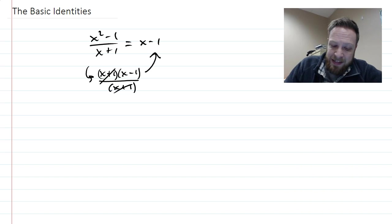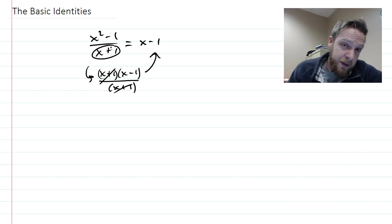And so that is an example of an identity here. We're basically showing the right side can come from the left side. Except for these places where you're dividing by 0, they're identical in every way.